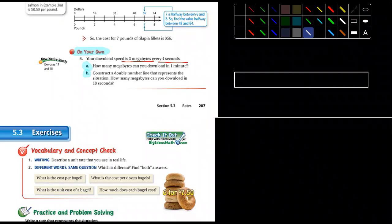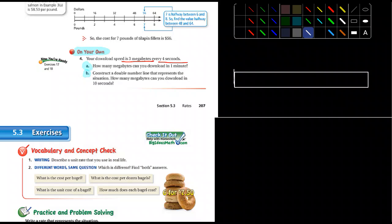I'll get this started for you here. So here's my double number line. And so right here, the top will be megabytes. I'll just put MB. And the bottom will be seconds. And so this will just start at zero with each one. And the first mark I'll put right here, it's going to be three megabytes for every four seconds.